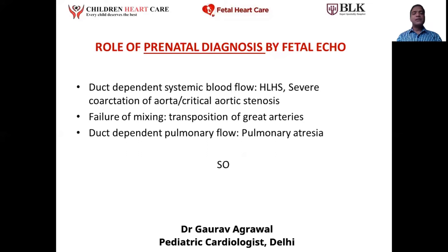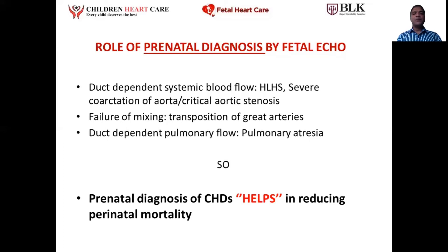These are serious forms of heart disease that should be diagnosed even before birth so that we can timely pick the problem and counsel the family accordingly. Duct-dependent systemic blood flow occurs when the major blood vessel known as the aorta is severely obstructed or interrupted, like severe coarctation of aorta or critical aortic stenosis. Duct-dependent pulmonary flow occurs when the vessel supplying blood to the lungs is obstructed or atretic. There is also failure of mixing of blood in transposition of great vessels where mixing is required for survival of the child. For these problems we can diagnose the fetus before birth to decrease perinatal mortality.